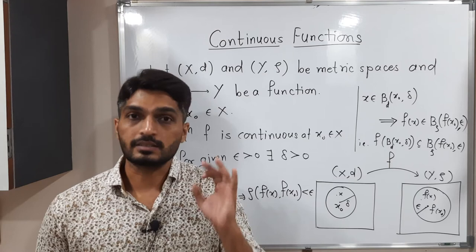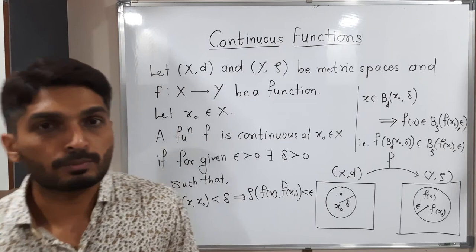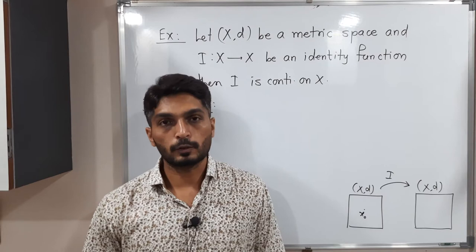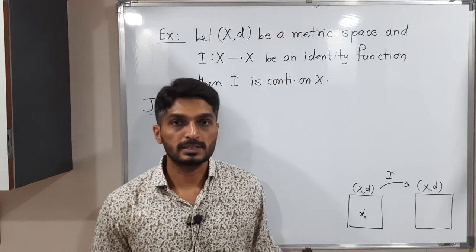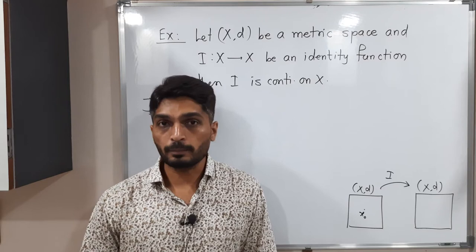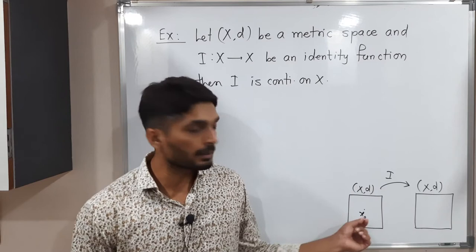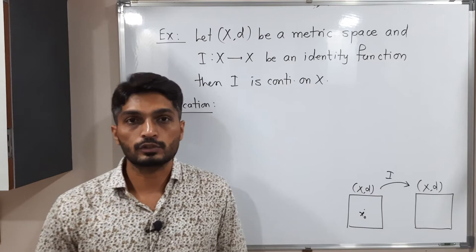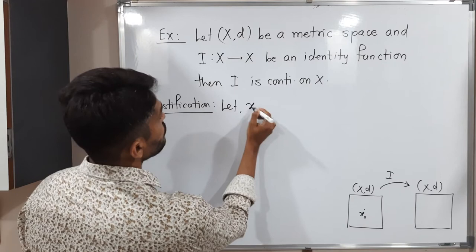Let us discuss one example. We have a metric space (X, d). The identity function I is defined from (X, d) to (X, d), so domain and codomain are both the same. We have to prove that the identity function is continuous. We will take one arbitrary point x₀ and prove continuity at x₀, so we can declare it is continuous at each point of X.